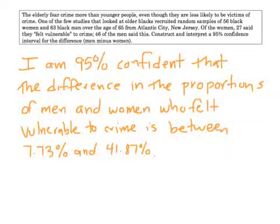And then we just interpret things. I am 95% confident that the difference in the proportions of men and women who felt vulnerable to crime is between 7.73% and 41.8%. Which is a fancy way of saying if you think about it that men feel more vulnerable to crime. Because since your entire confidence interval is a positive number you are 95% confident that men feel more vulnerable than women. And so the interpretation of the last paragraph is easier for confidence intervals here clearly.